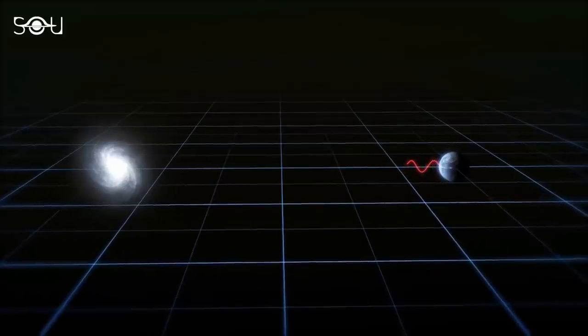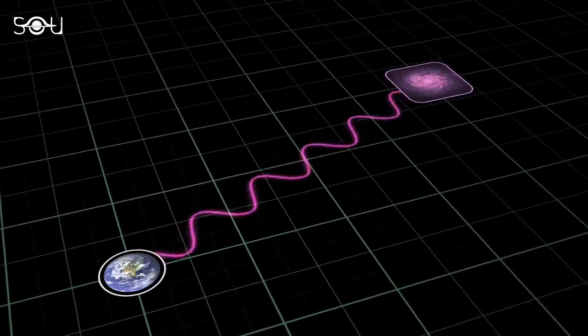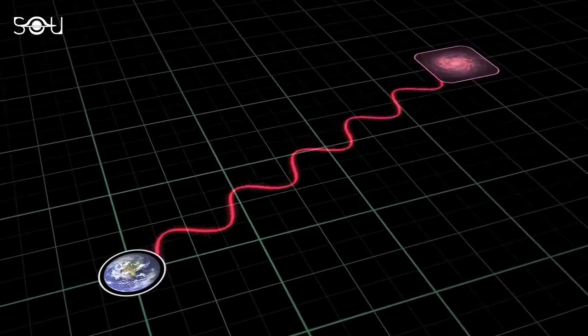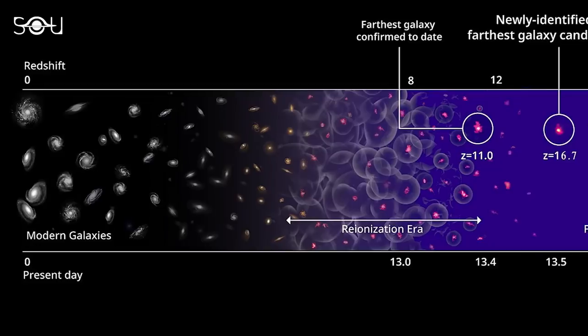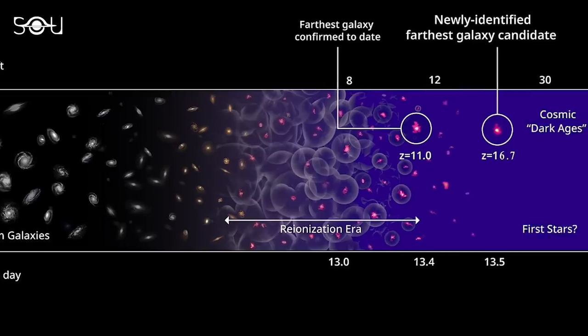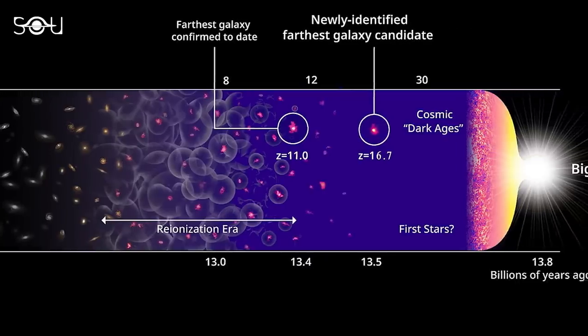In other words, it becomes redshifted. Astronomers denote redshift by dimensionless quantity Z. Z equals zero is the present time, and as its value increases, so does the look back time and the distance to the celestial object.